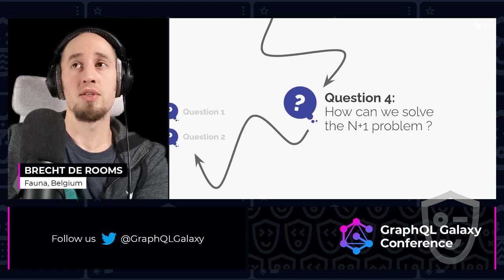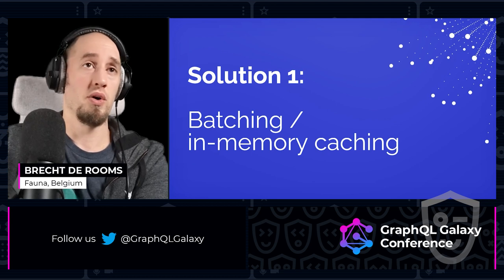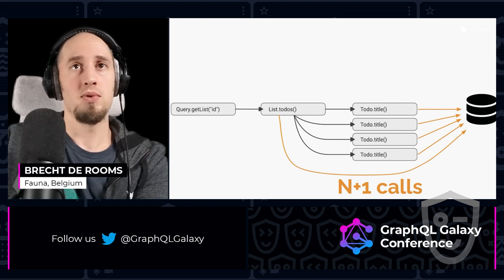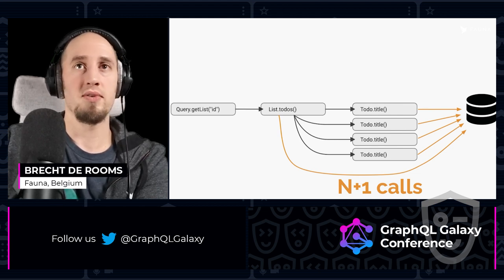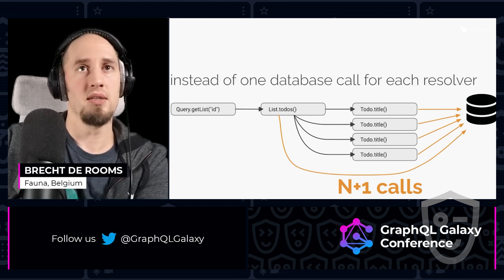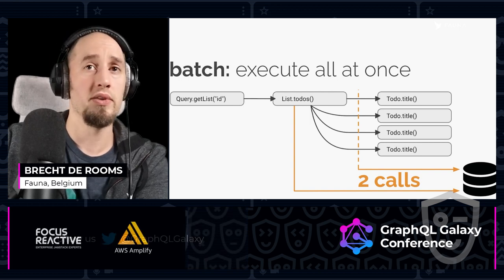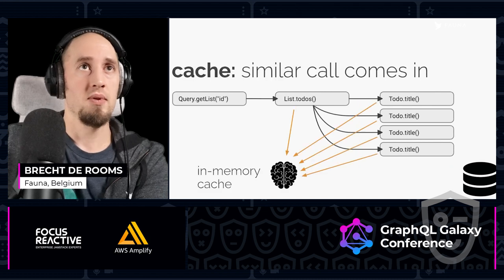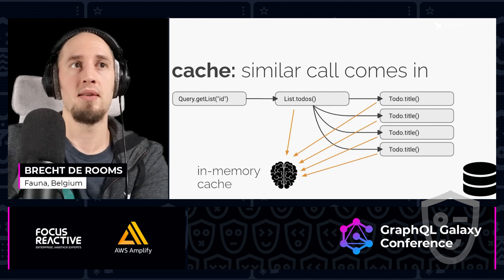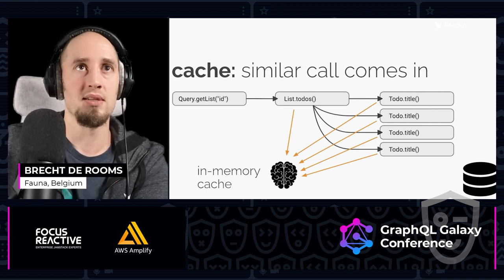So question four: how can we solve the n plus 1 problem? Well, there are multiple solutions. Solution one is batching or in-memory caching. In that approach, we're going to hook into these functions, for example todo.titles, and just wait until all the todo.titles are called, and then combine these. So instead of doing n calls for these todo.titles, we're going to do one call, so in total two calls. That's batching, and that's often combined with caching — if a similar call comes in, instead of going to the database, we can go to an in-memory cache, so we don't hit the database at all.